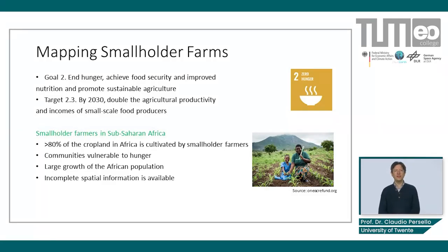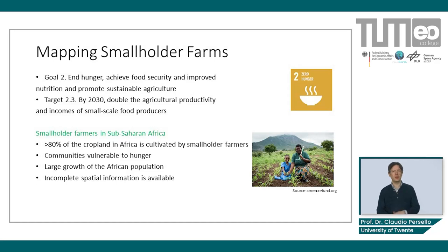This video is about mapping smallholder farms. The topic is linked to SDG 2 Zero Hunger, and in particular to target 2.3, which aims to double the agricultural productivity and incomes of small-scale food producers by 2030.